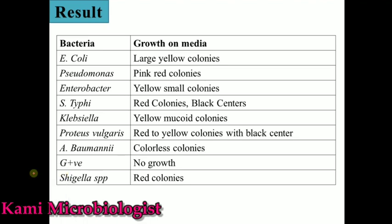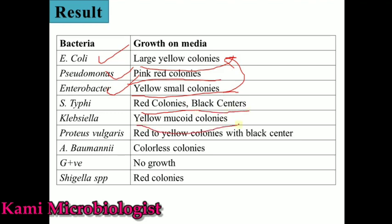Remember, this media is specially used for the isolation of Salmonella and Shigella bacteria, but we can also use it for E. coli and other enteric pathogens. Note that Staphylococcus aureus does not grow on this medium, but the remaining gram negative bacteria can easily grow. E. coli produces large yellow colonies, Pseudomonas produces pink-red colonies, Enterobacter produces small yellow colonies, and Salmonella produces red colonies with a black center.